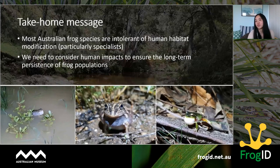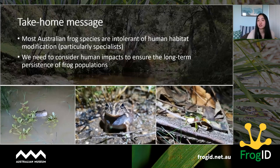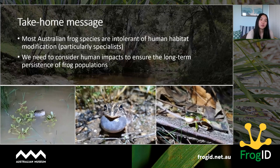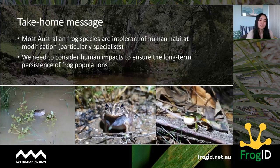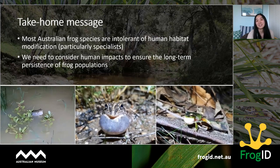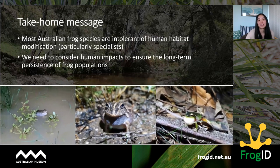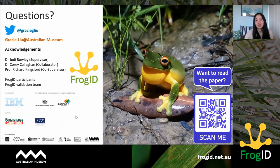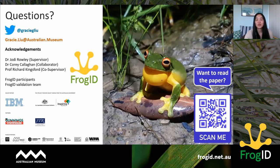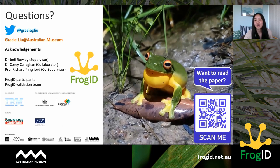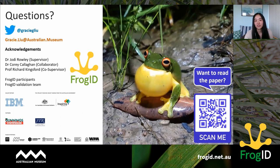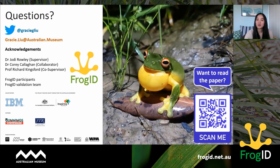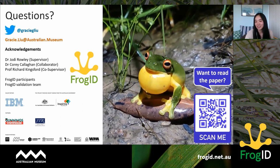The take-home message is that most Australian frog species are intolerant of human-driven habitat modification — particularly specialists. We really need to consider human impacts to ensure the long-term persistence of frog populations, and citizen science is a valuable tool we can leverage to understand how species respond to anthropogenic habitat modification. That brings me to the end of my talk — if you want to find out more, this research is available online; just scan the QR code. Thank you everyone for sticking it out to the end, and I'm happy to take any questions.